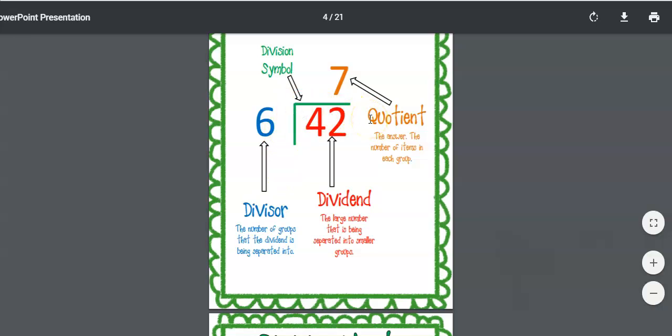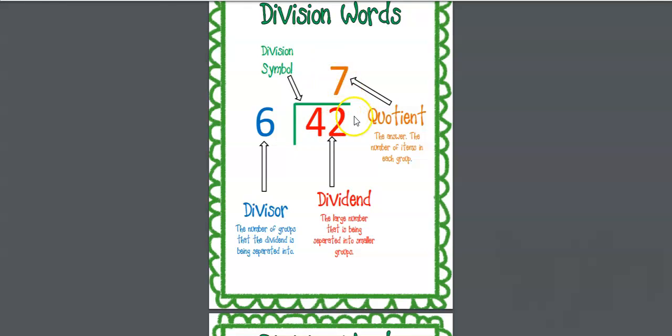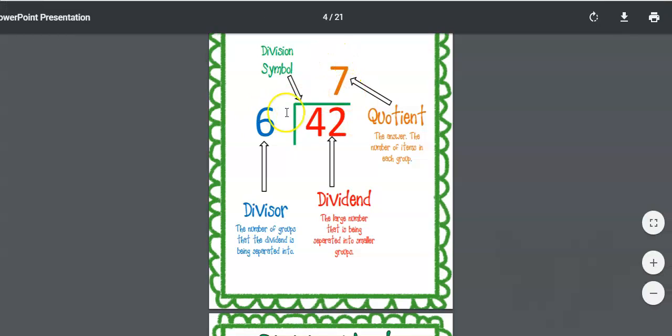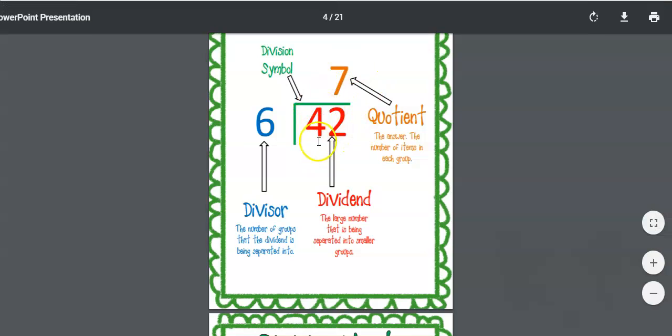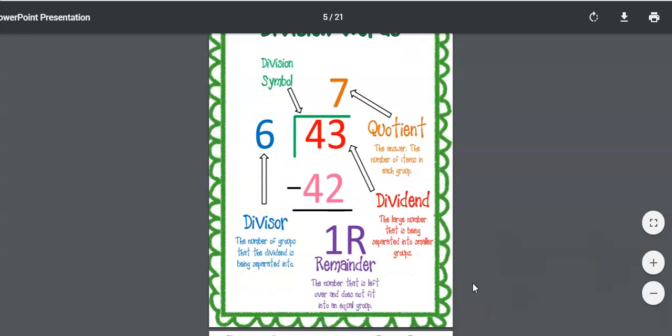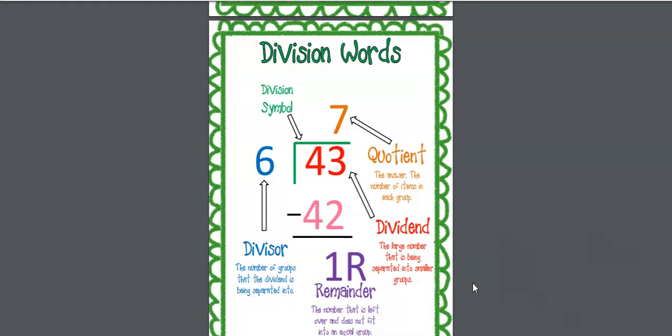You always line it up. You see here, because if we had put the 7 above the 4, that wouldn't be correct because the 4 actually stands for 40, right? And 7 cannot go just into that 4. It has to go into the whole 42 in order to work correctly. I'm going to leave it at that and then we're going to go through some examples on how to do different things before we get too out of control here and I want to work through some things with you so you can see them.